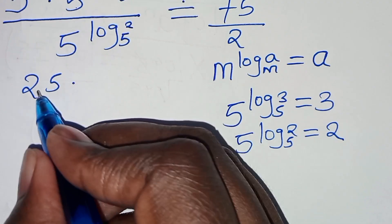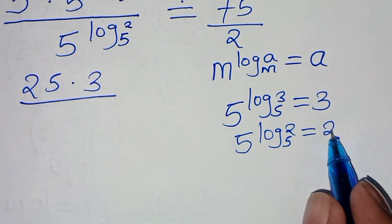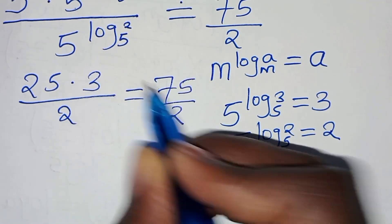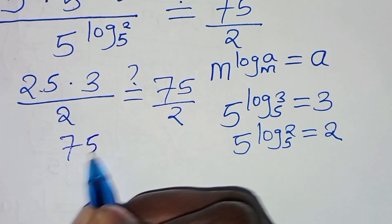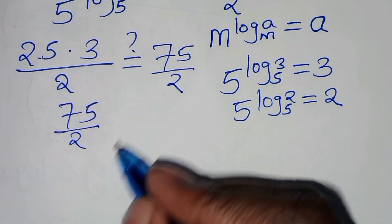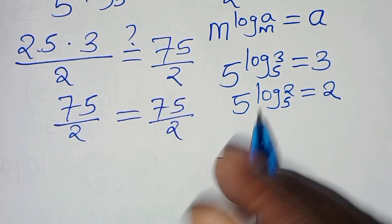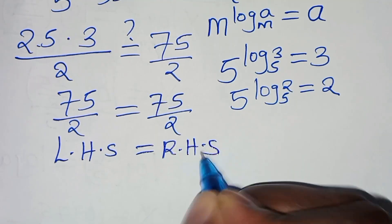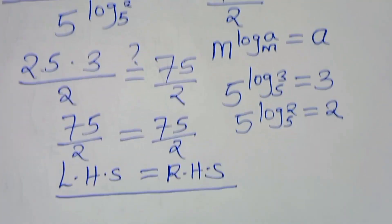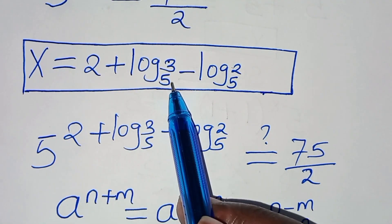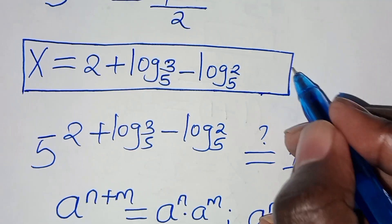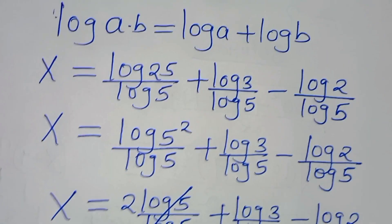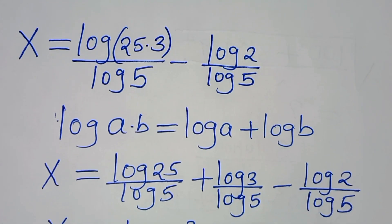Substituting: 25 times 3 divided by 2 equals 75 over 2, which equals 75 over 2. The left-hand side equals the right-hand side, confirming that x equals 2 plus log base 5 of 3 minus log base 5 of 2 satisfies the equation. Please like this video and subscribe — see you in the next video!